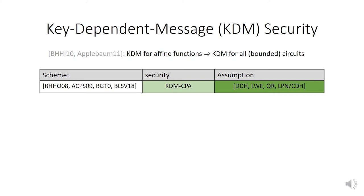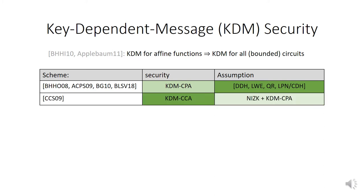The case of KDM chosen-plaintext attack is well understood — it's pretty much solved. But chosen-ciphertext attack is the de facto security notion for encryption because it captures man-in-the-middle attacks. KDM-CCA encryption is much harder to achieve. This has been solved by Camenisch et al., who built KDM-CCA secure encryption from any KDM-CPA secure scheme plus NIZK, relying on the Naor-Yung paradigm. But this requires the extra assumption of NIZK.